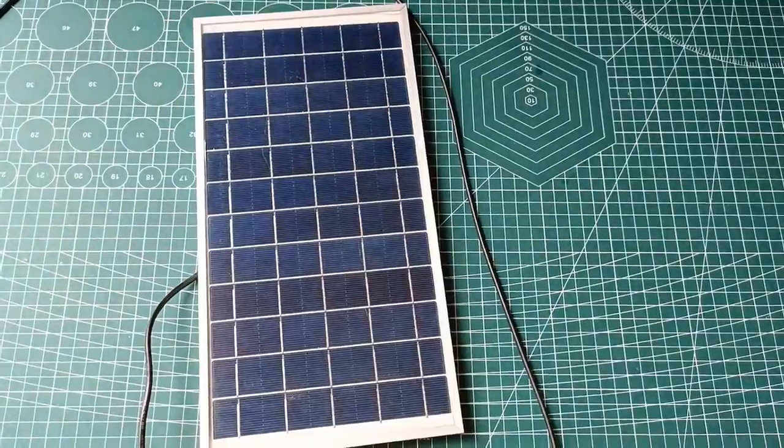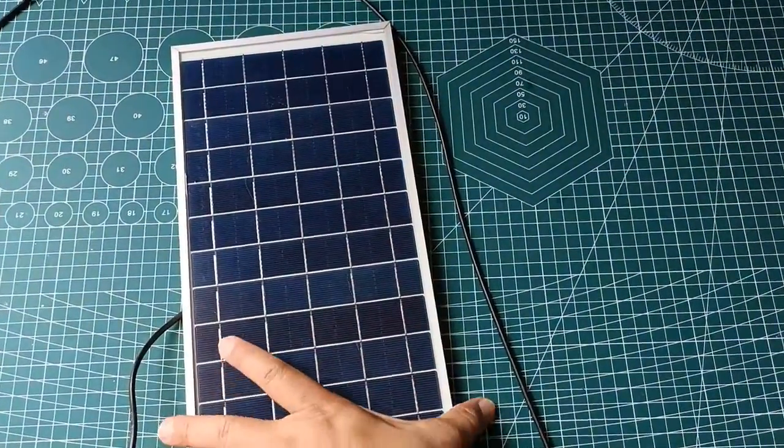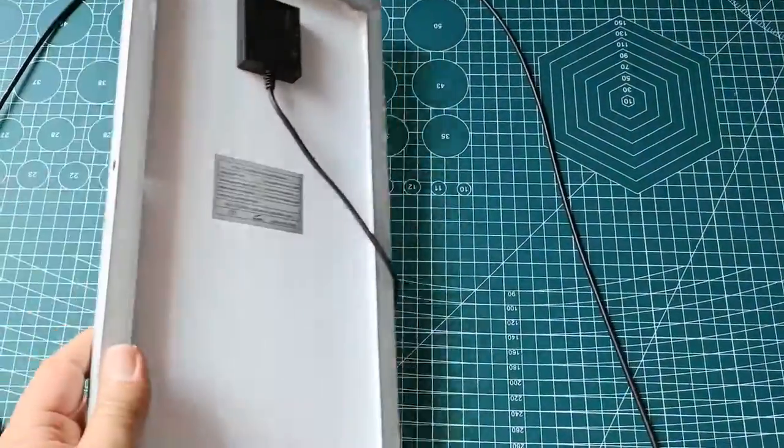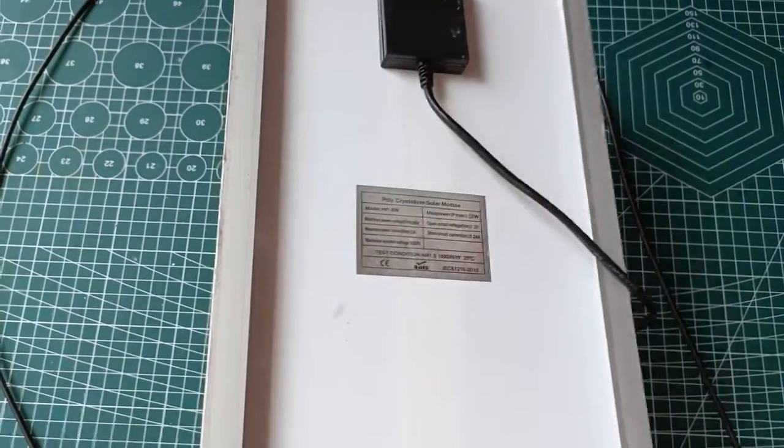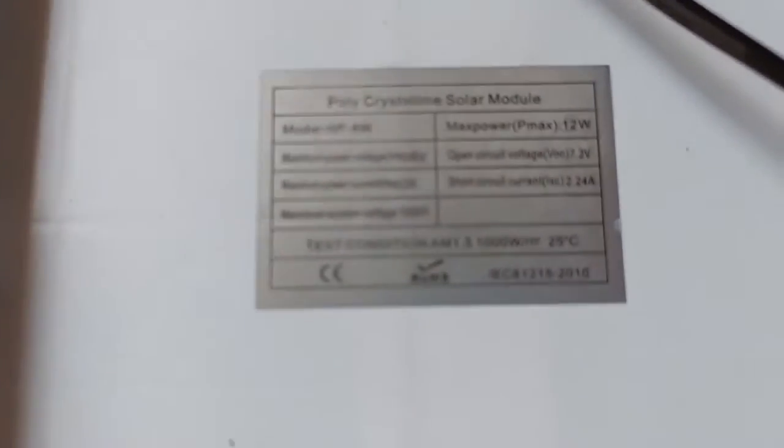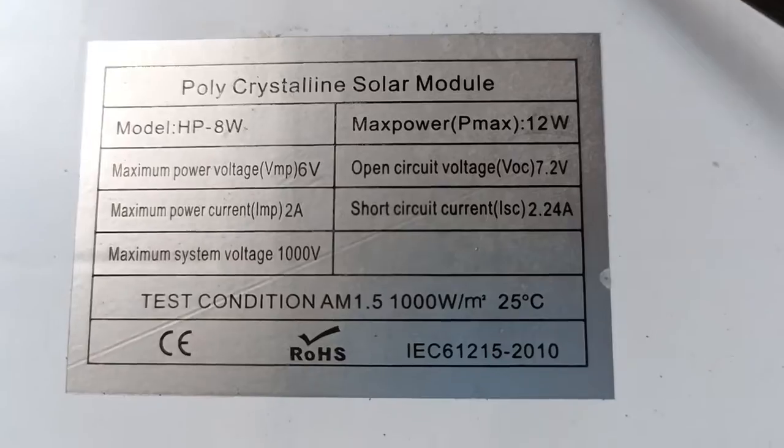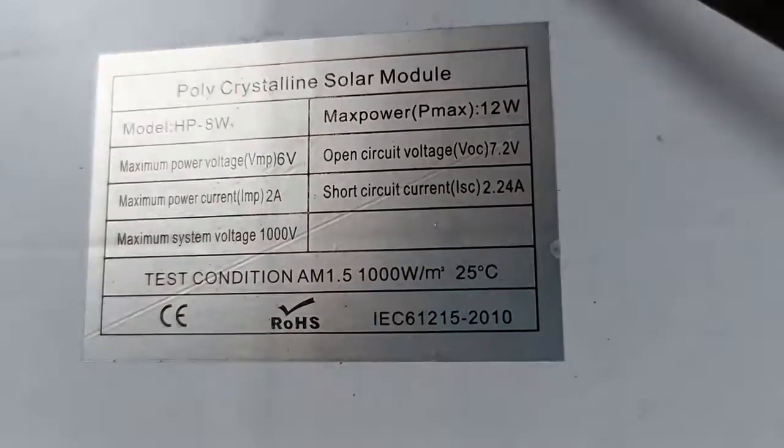I will also measure the voltage and current of my 25 watt solar panel. This one is rated actually at 12 watts maximum power with open circuit voltage of 7.2 volts and the same 6 volts maximum power voltage.